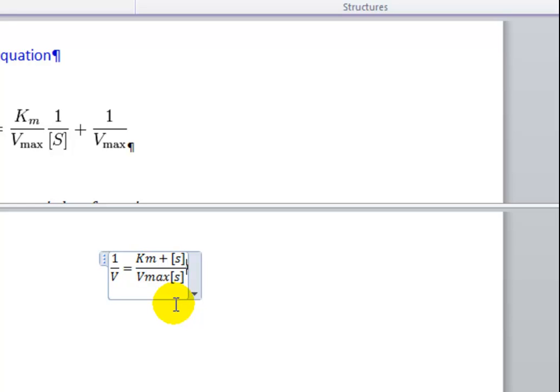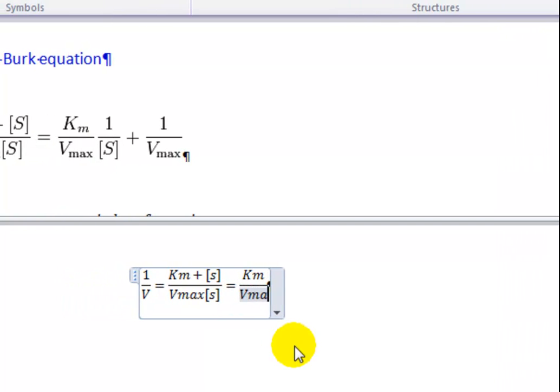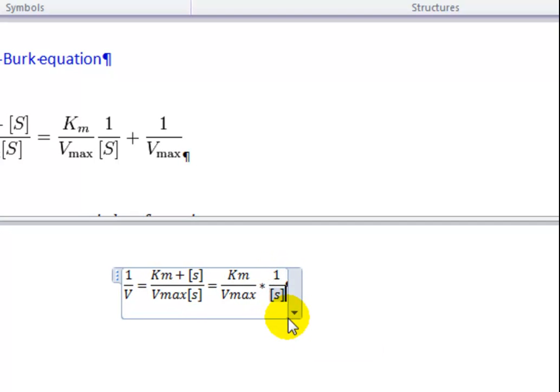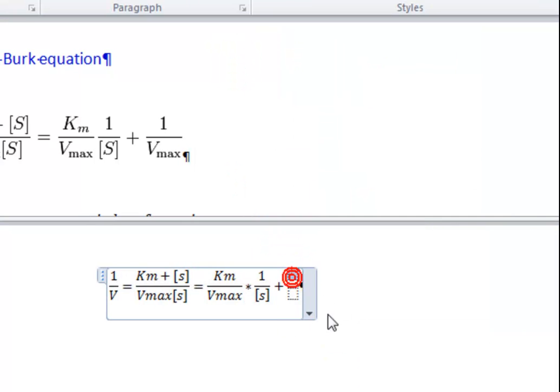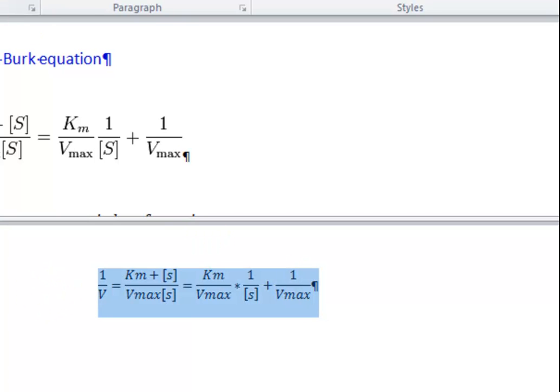Go to the end again. Equals. So it's saying that this is effectively the double reciprocal plot of the Michaelis-Menten equation. So we start off with another fraction, Km over V max [S]. Again press the end key. Plus another fraction, 1 over V max. And there we go, the Lineweaver-Burk equation done in not a lot of time.